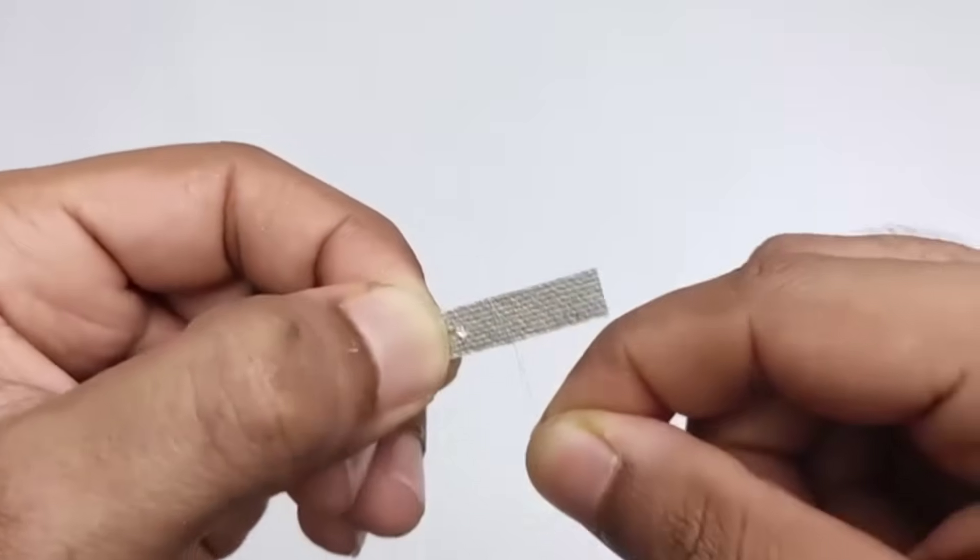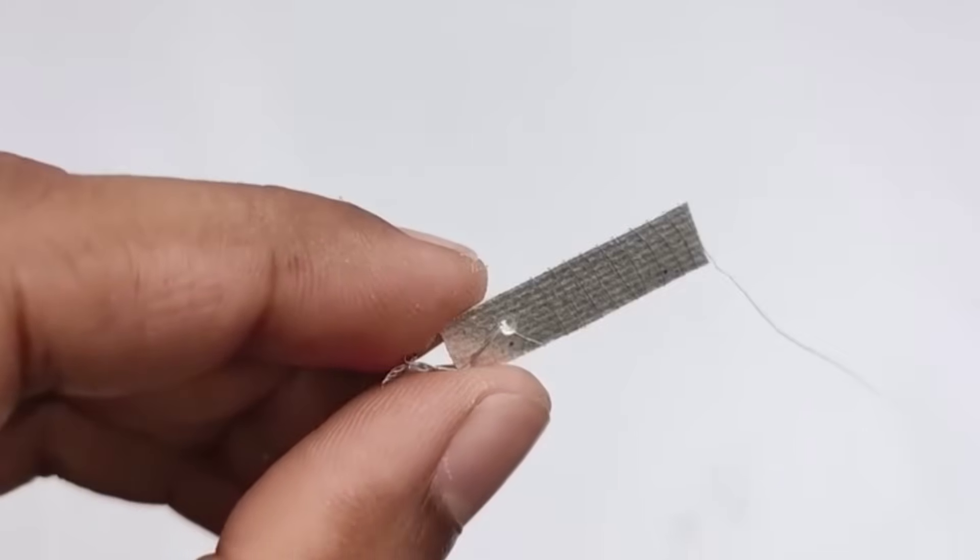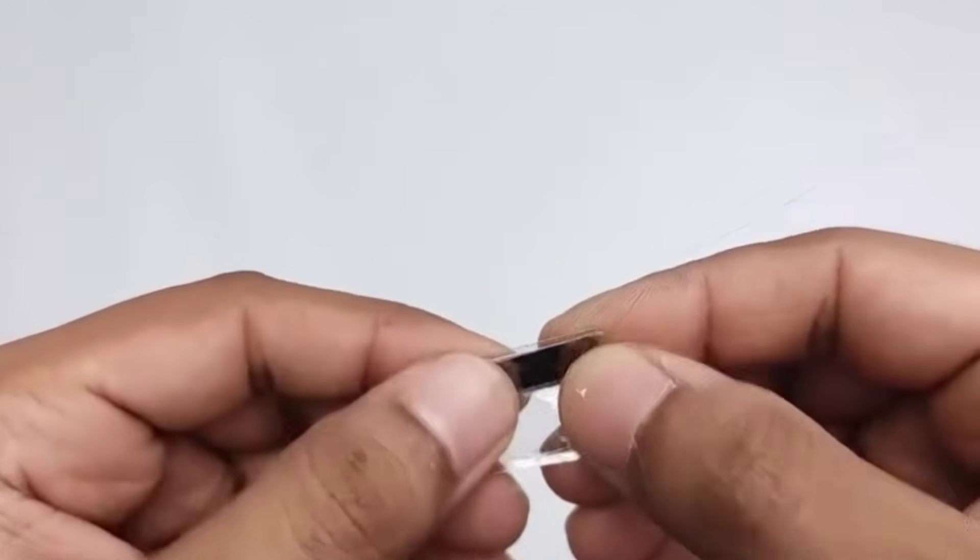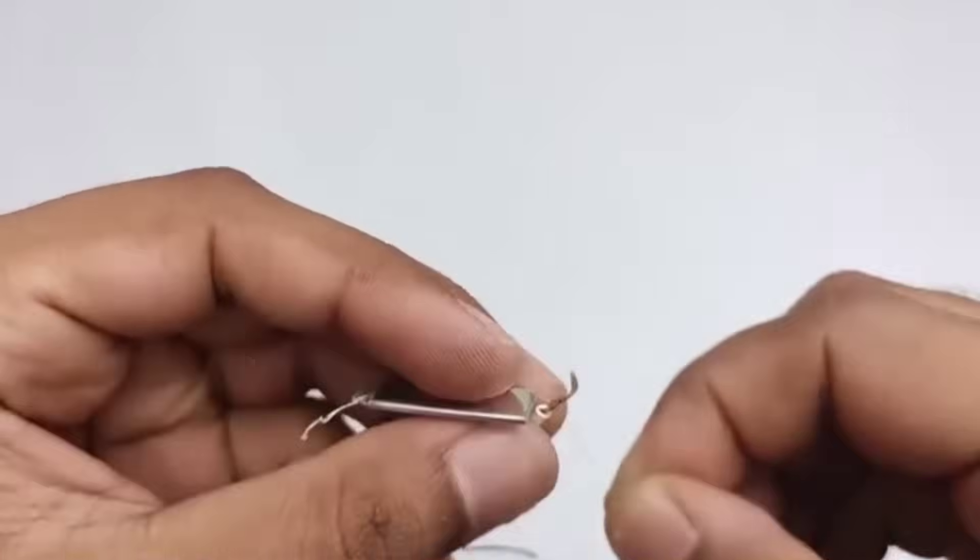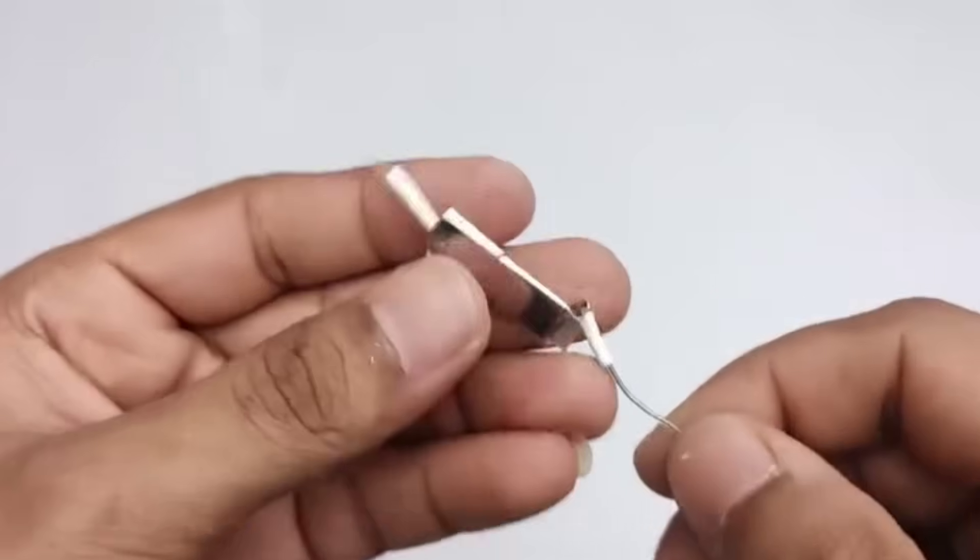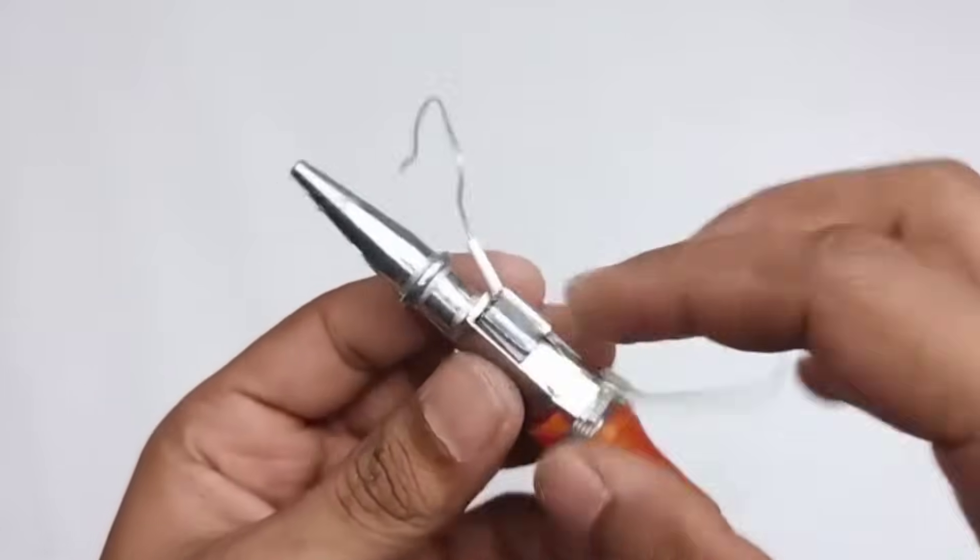As you can see here, the heating wire has now been replaced. The new wire is in place and all the other parts have been reassembled. I've carefully positioned the wire inside the nozzle, which is the heart of the glue gun where all the heating and melting happens. We've securely fitted it into the nozzle and assembled all the parts together.